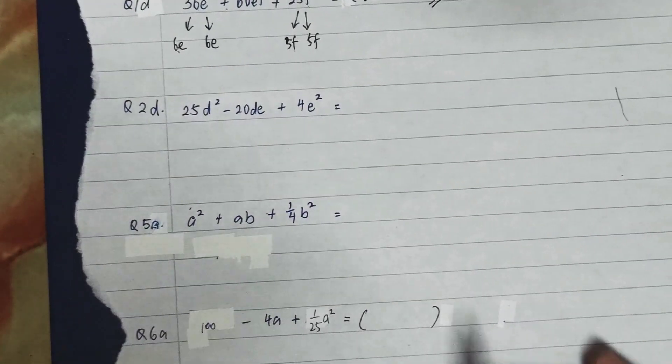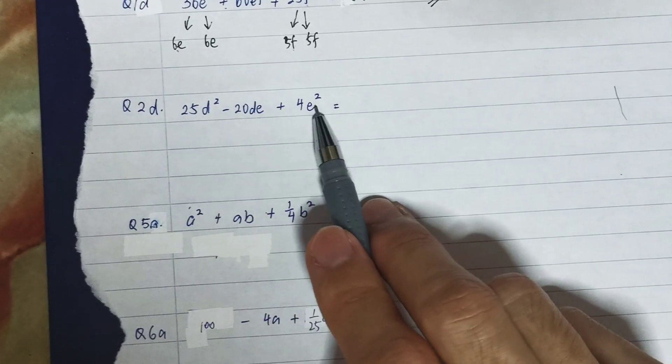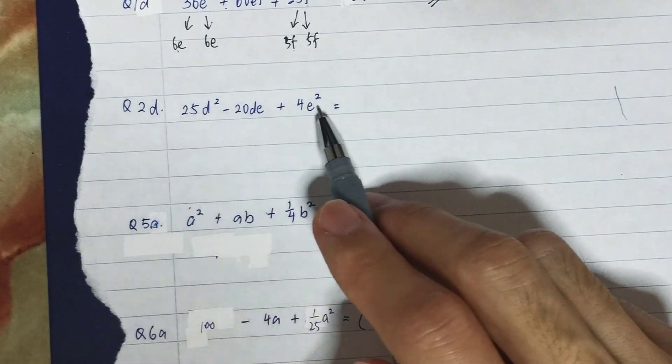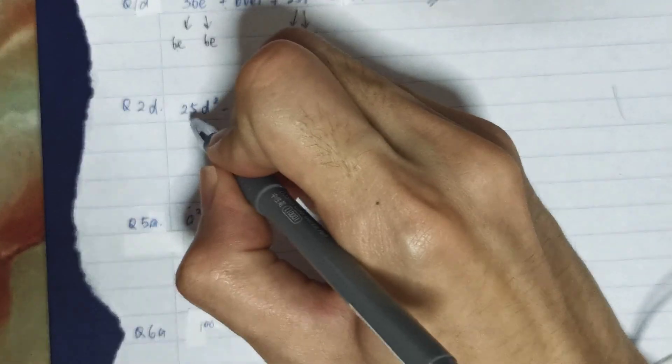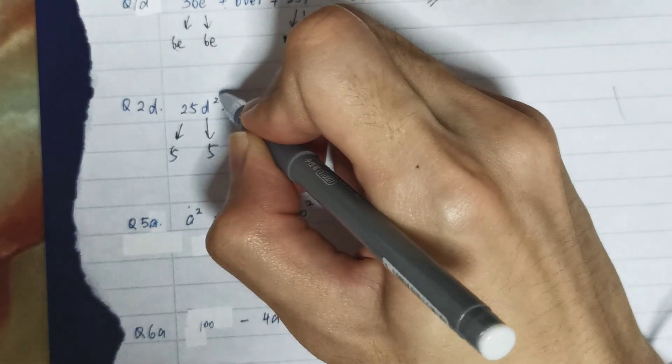Let's look at the next example, question 2d. For question 2d, let's check whether the first term and the last term are square numbers or not. I can write 25 as 5 times 5, and d² if I square root it will be d times d.